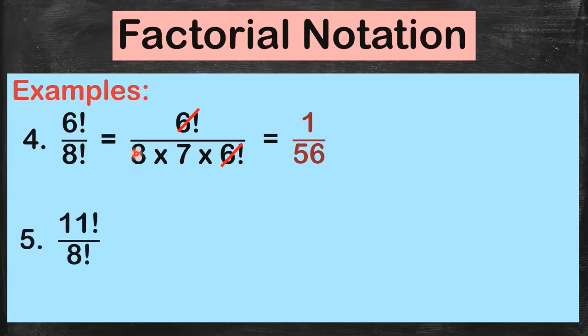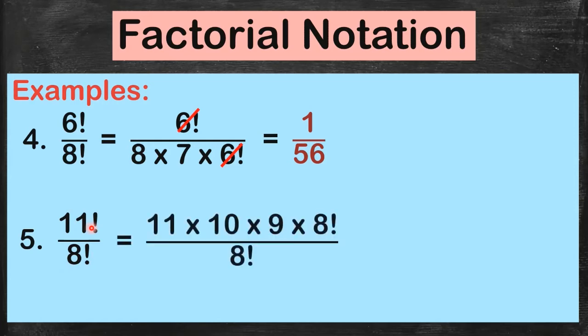Let's try more. 11 factorial divided by 8 factorial. Si 8 factorial, hindi na natin siya i-expand. Si 11 factorial na lang. But magsa-stop na tayo sa eight. Like 11, 10, 9, and then we stop kay eight. So magka-cancel yung 8 factorial, and then you have 11 times 10, you have 110. Times 9, you'll get 990.